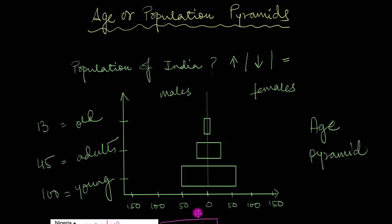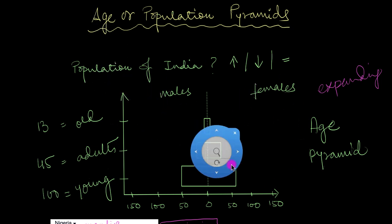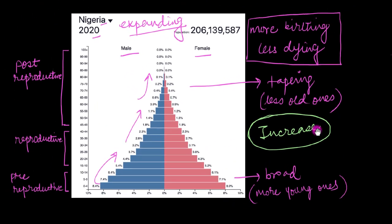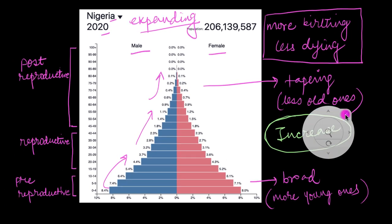Even the tiny pyramid we drew earlier is an expanding type, because there are so many more younger people compared to older people. You will generally find this trend in developing nations of Africa, like Ghana or Angola — in those countries the population is currently expanding.